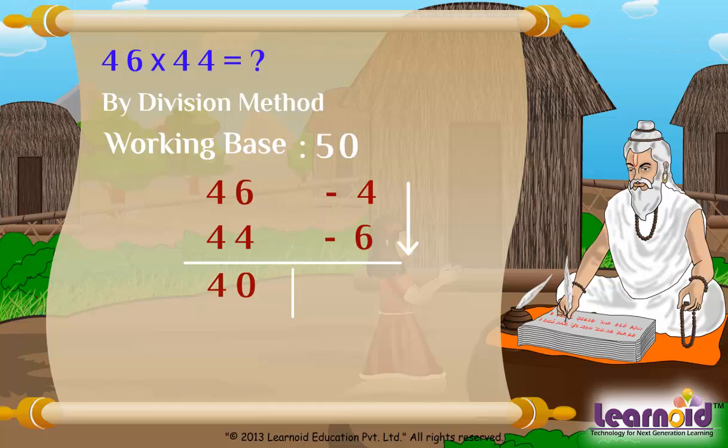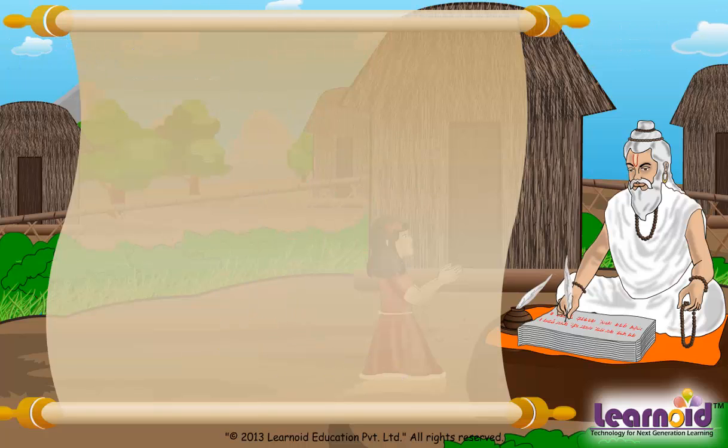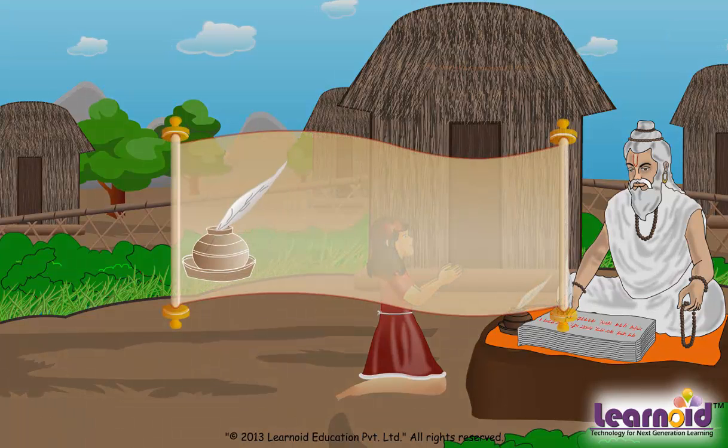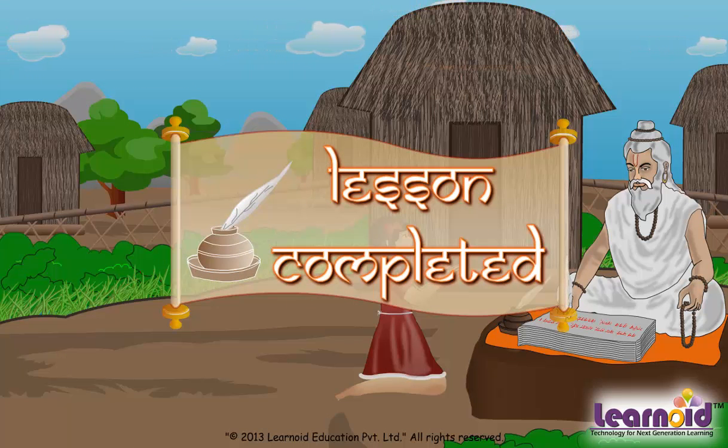And by vertical multiplication 4 into 6 equals 24 on right. As we have taken parent base 100, we will keep 2 digits on right. As working base is 100 by 2, we will divide 40 by 2. So we get 46 into 44 equals 2024.